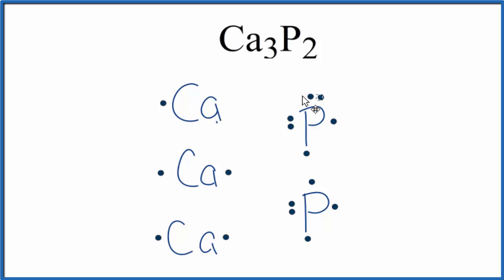So calcium will move one here, here, this calcium here, and you can see why we need three calcium atoms to complete the octet on the two phosphorus atoms. So now each phosphorus, that has eight valence electrons. That's very stable.